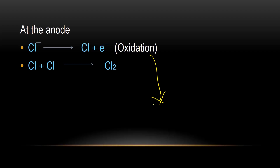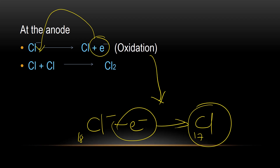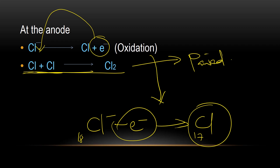Now what happens at the anode? The chlorine moves to the anode and donates an electron to the anode. So Cl⁻ minus e⁻ gives Cl. That is electron loss. Chlorine here has 17 electrons, chlorine ion has 18. It loses one electron to the anode and gets deposited as chlorine. But before it gets deposited, it pairs with itself to give a chlorine molecule, Cl₂.